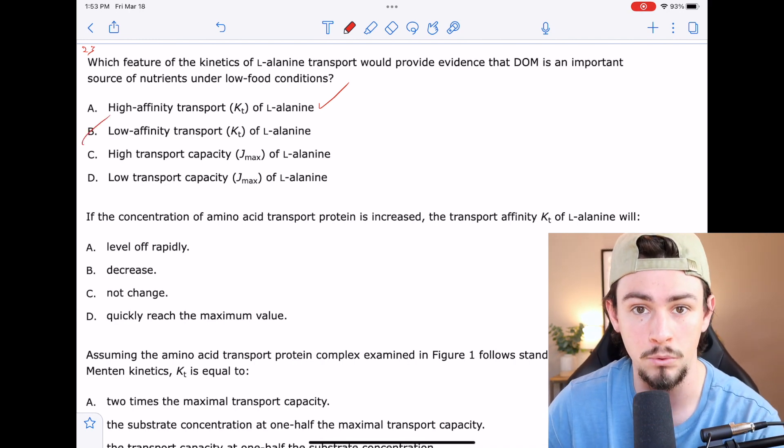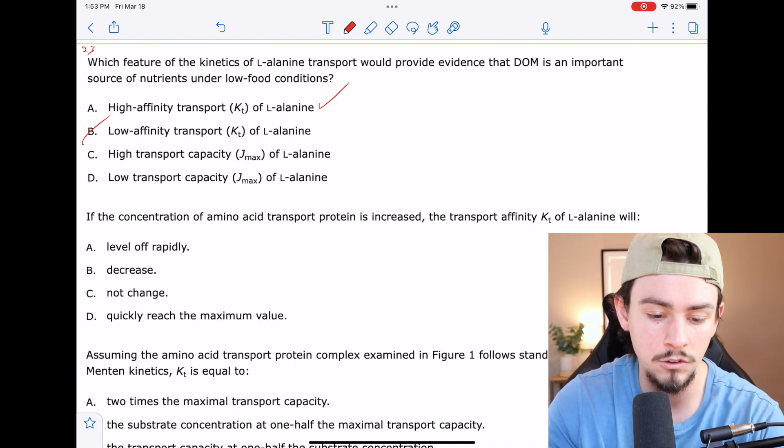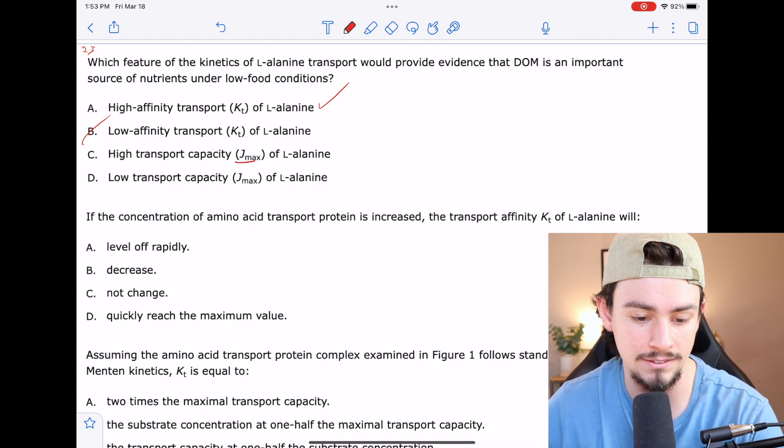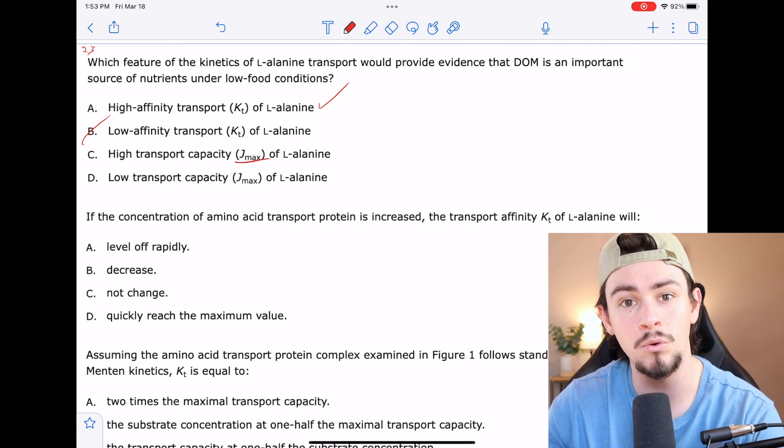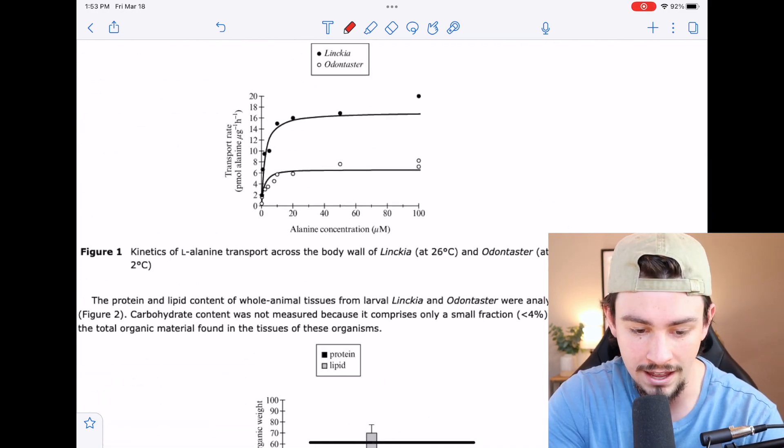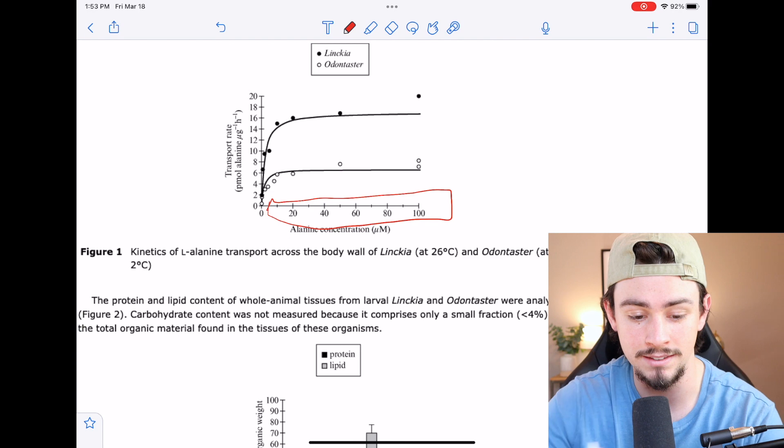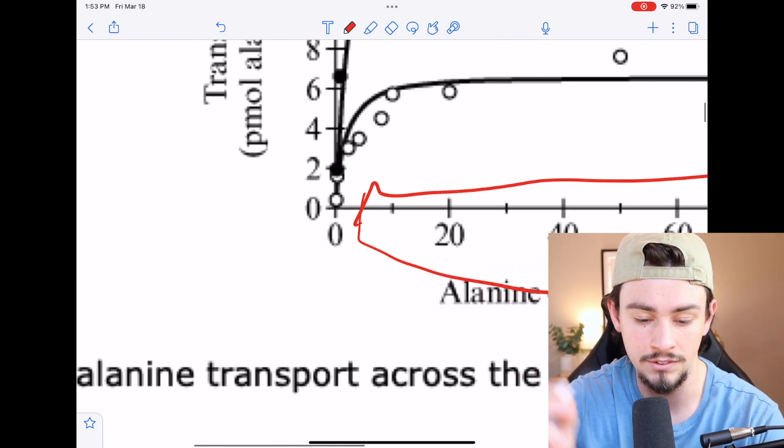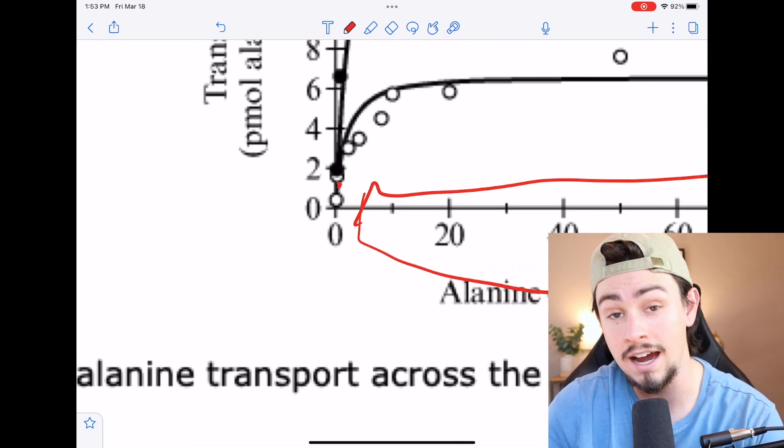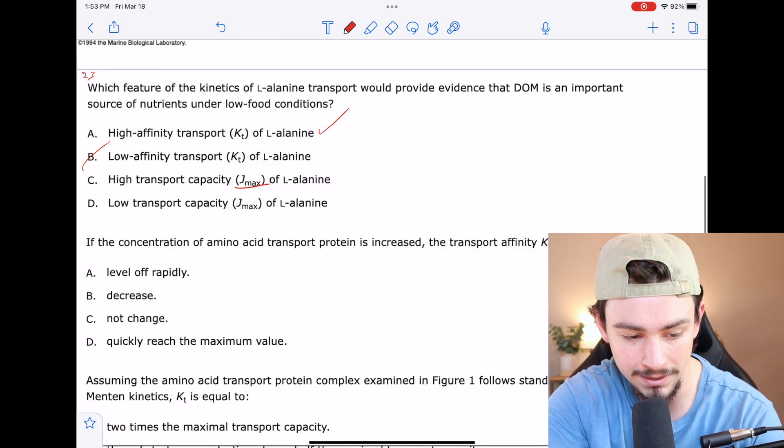C says high transport capacity. This wouldn't really be useful under low food conditions because a transport capacity or a Vmax would only be applicable when you have a ton of substrate. So if you look at this figure, if you don't have a lot of substrate, it doesn't matter how high your Vmax is because these are all starting around the same location. So something like a high affinity or a lower KM would actually be more useful. So I'd say maybe not C.